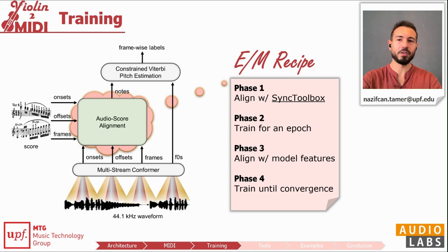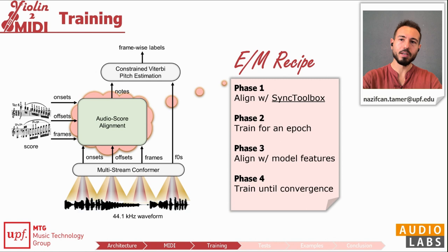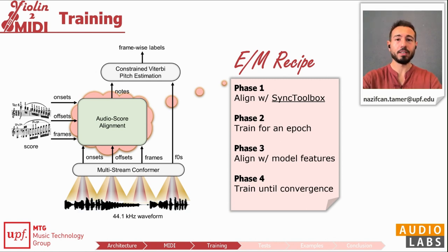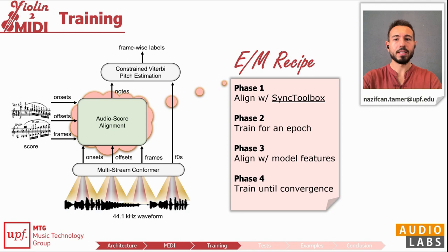So we took an expectation-maximization approach to train a model using these audio-score pairs. It consists of four stages: first, generate fuzzy labels by conventional audio-score alignment; second, train the network with these labels; third, create finer alignments using the new model's features; and finally, train on this new dataset until convergence. It is like an old-school HMM-GMM, rewired.